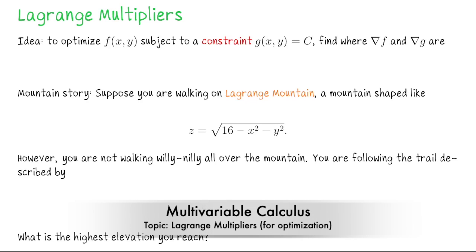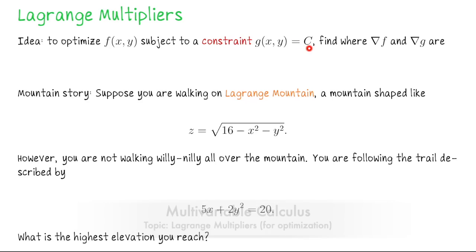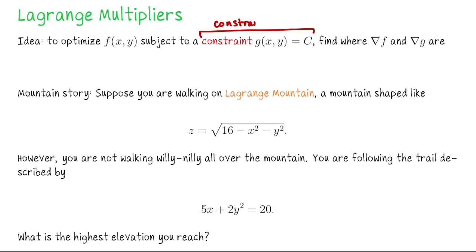In this lecture we're going to talk about Lagrange multipliers. The main idea is: if you want to optimize a scalar-valued function f of x and y subject to a constraint g of x, y equals c — a constraint we're putting on our domain — then we want to find where the gradient of f and the gradient of g are parallel vectors.